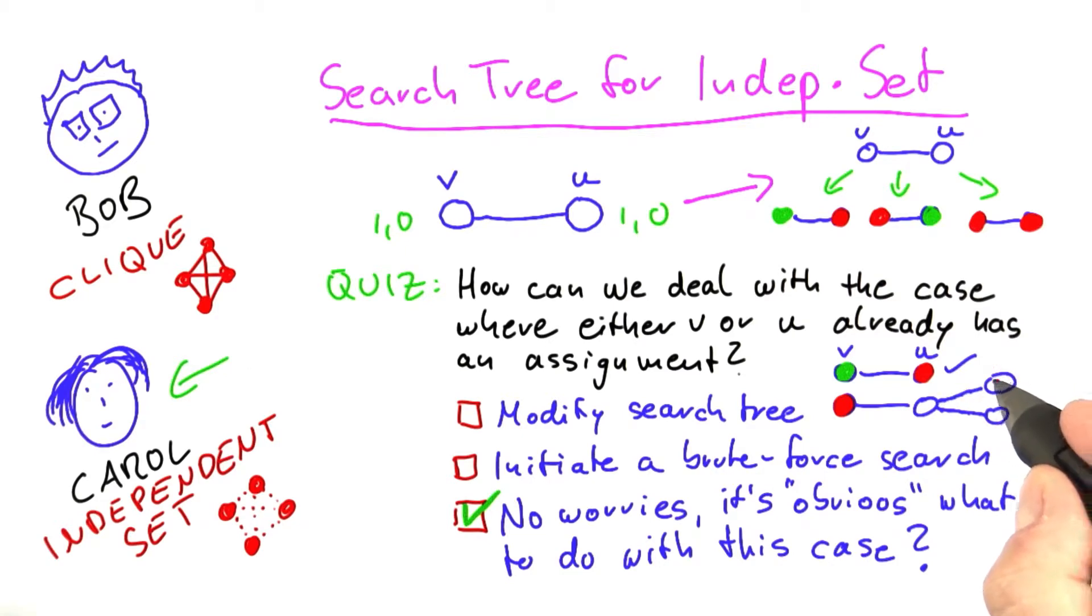If every vertex here, if every vertex here on the other hand already has an assignment, then we just discussed, because we just dealt with the other case, that all of these assignments here must be a zero. So all of these vertices here, and there can be more of course, are not part of the independent set. And that means that we can take U into the independent set again.